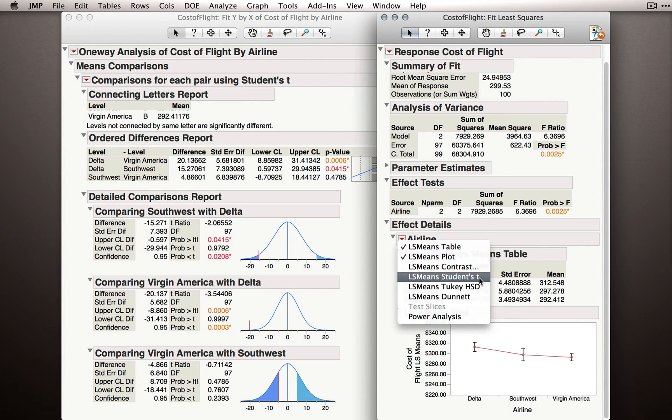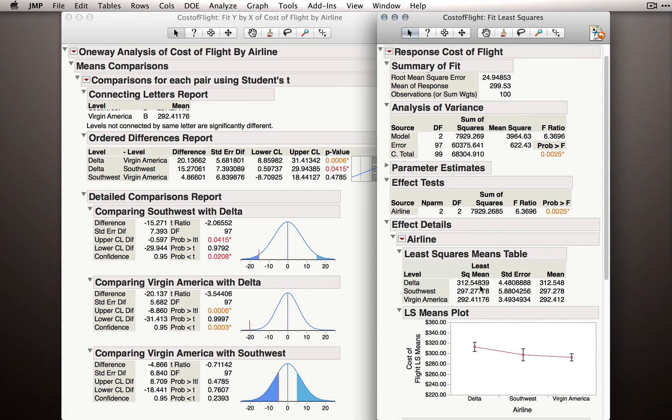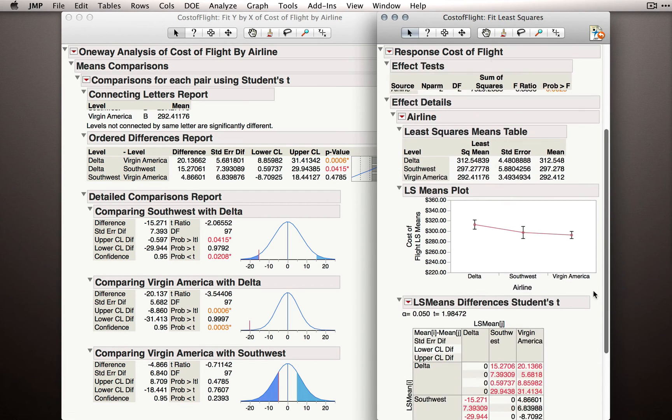The Least Squares Means here refers to the means that were fit by our Least Squares Modeling. These are the same means that we would find if we simply used distribution and broke up our groups by the factor of airline. Let me select Least Squares Means Student's t, and let me scroll down to reveal the output.